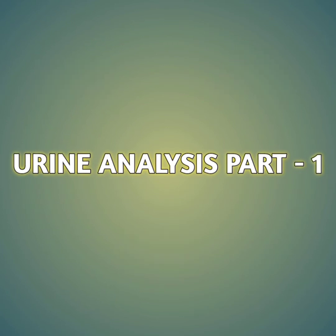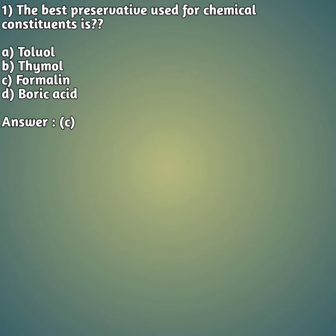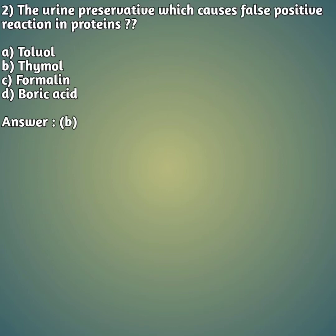Our first question: the best preservative used for chemical constituents is — option A: toluol, option B: thymol, option C: formalin, and option D: boric acid. They are asking for the best preservative used for chemical constituents, not for urine. So option C, formalin, is the best preservative used for chemical constituents.